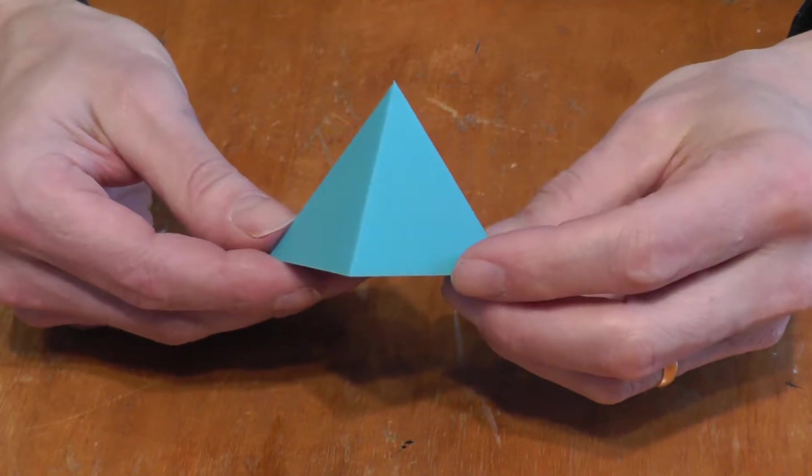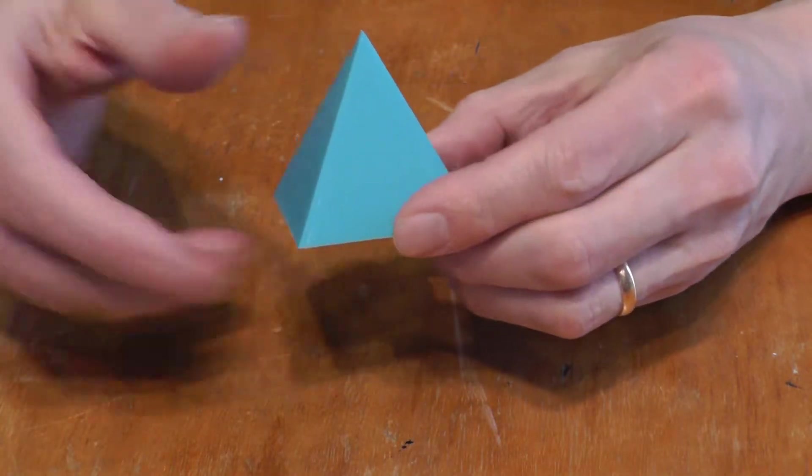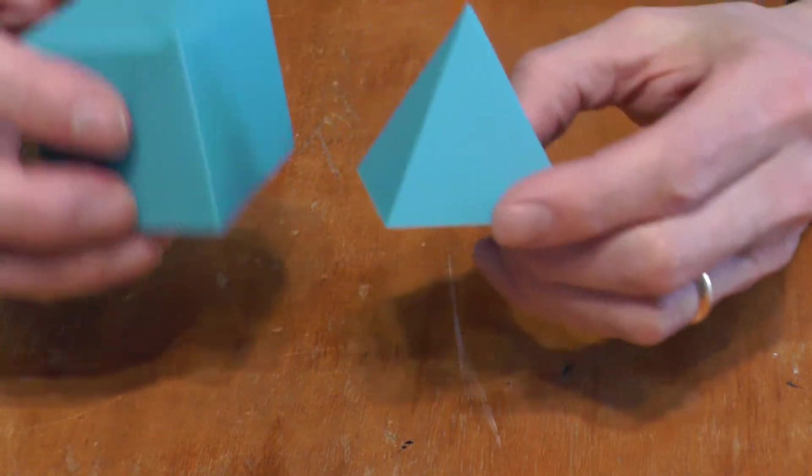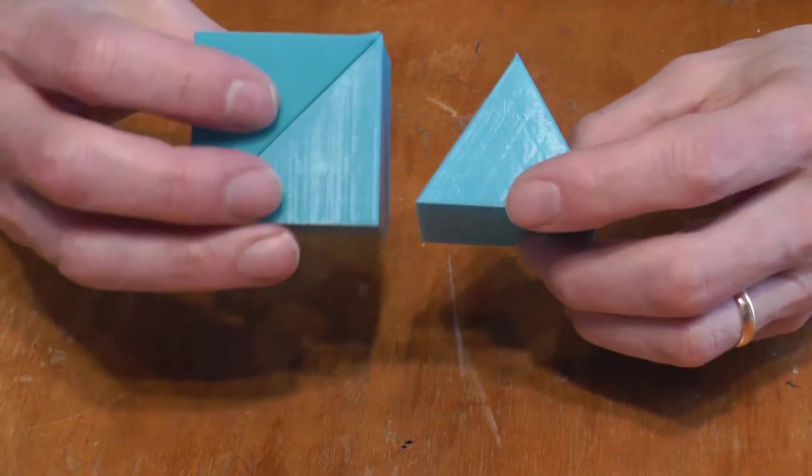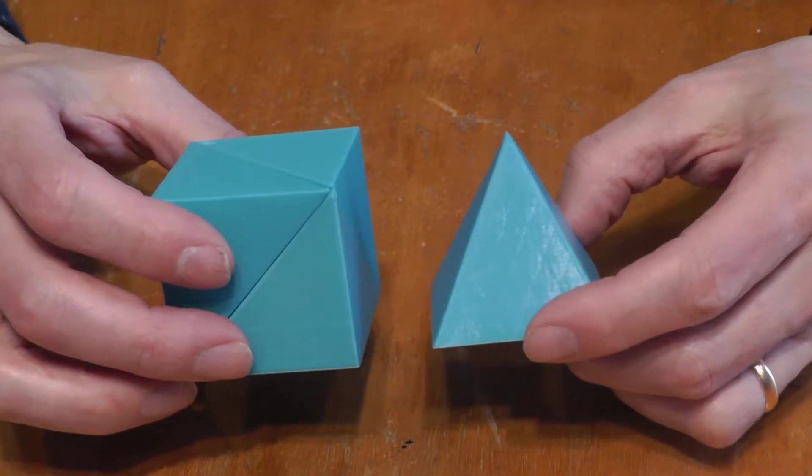I'm going to show that the volume of a square pyramid is the same as one-third of the volume of a rectangular prism with the same base and the same height.